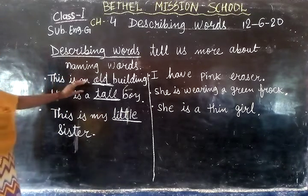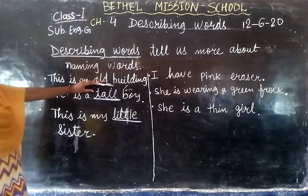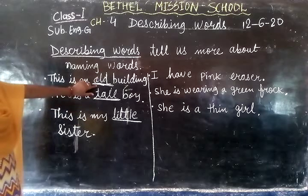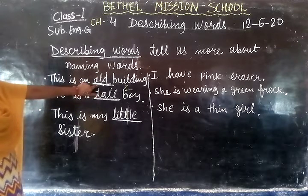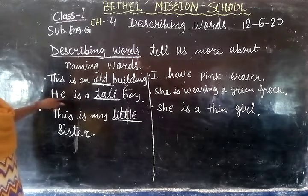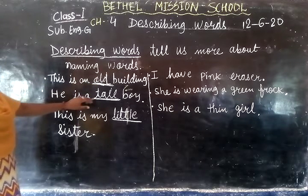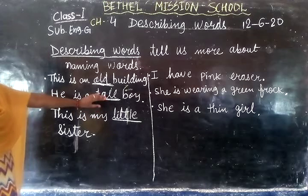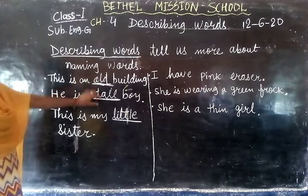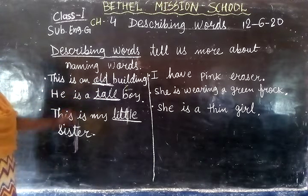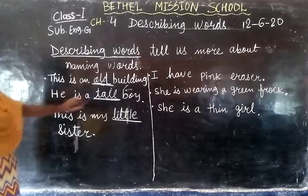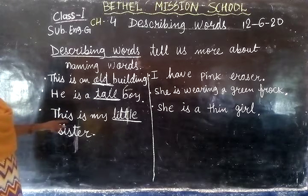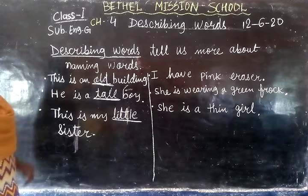This is an old building — so 'old' is the describing word. Second is: he is a tall boy, so boys are tall. 'Tall' is the describing word describing the word 'boy'. And this is my little sister — 'little' describes sister.